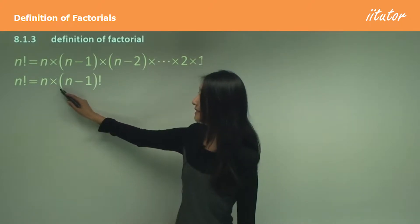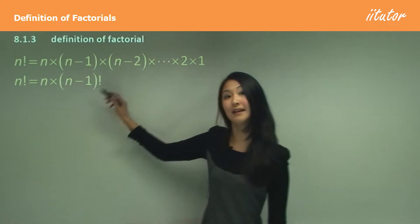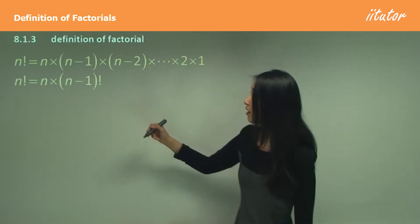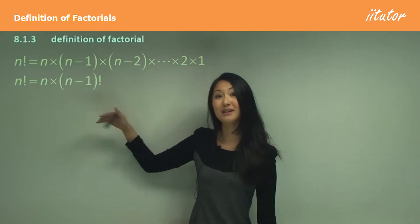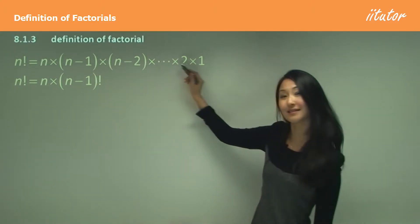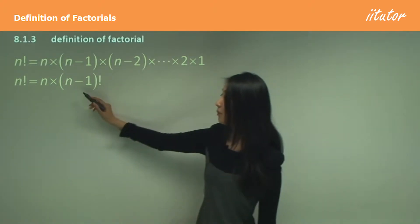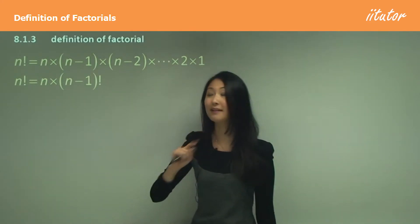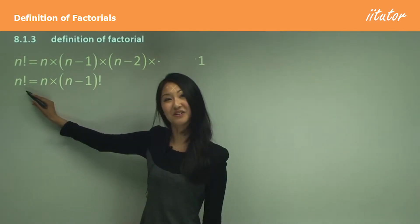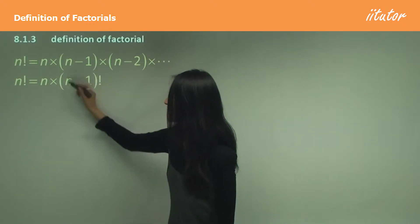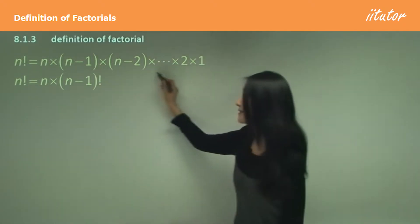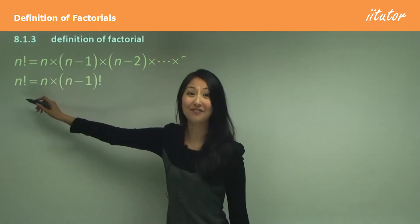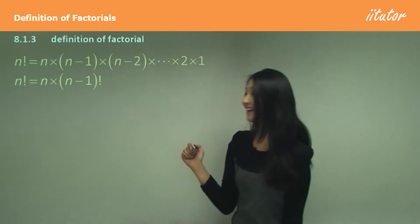Factorial can also be written this way: n factorial can become n times (n−1) factorial. This is because (n−1) factorial essentially covers all of the remaining multiplication. So if you multiply (n−1) factorial by one number greater — that is, by n — you get n factorial. So n times (n−1) factorial equals n factorial.